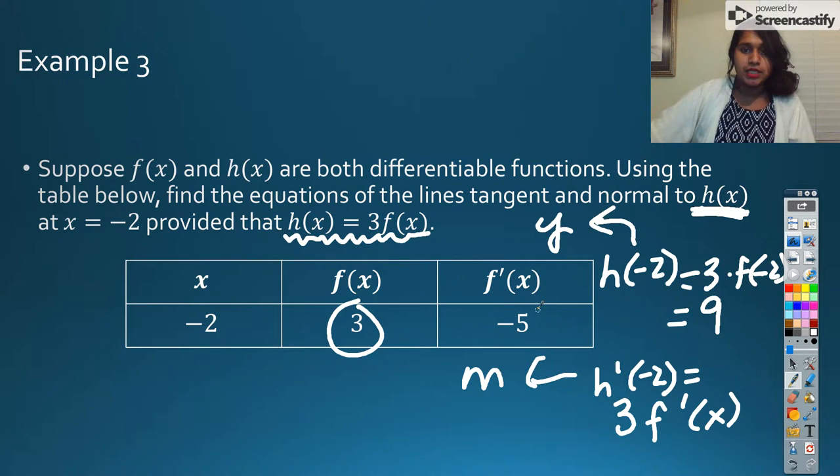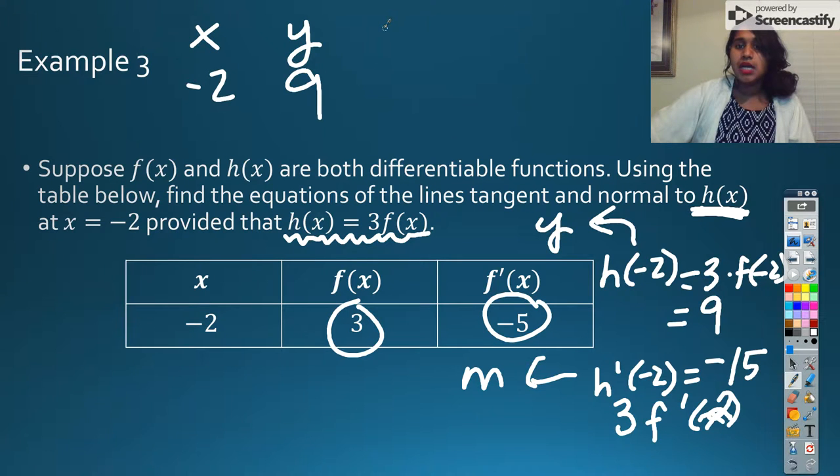But we're not quite there yet, so we're going to just have a constant multiple and f prime. So we know that f prime of negative 2 is negative 5. So 3 times negative 5 is negative 15. And that's my m. So if I come up here and I write my x is negative 2, my y we calculated was 9, my m is going to be negative 15. Therefore, my m sub n is going to be negative negative, so that's going to be a positive 1 over 15.